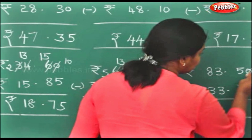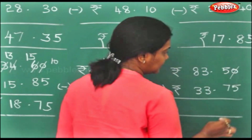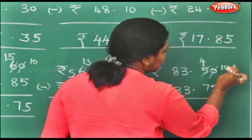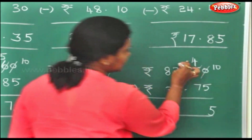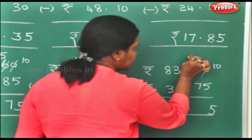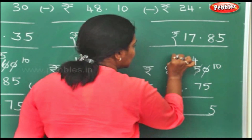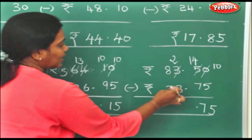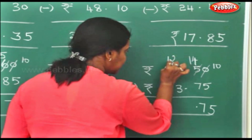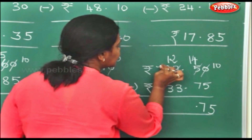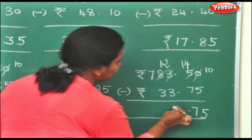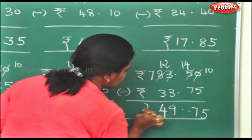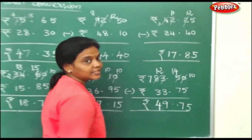Here again, this 0 you cannot minus it, so this becomes 10, this becomes 4. 10 minus 5 will be 5. You cannot take away 4 from 7, so this becomes 14 and this becomes 2. 14 minus 7 will be 7. 2 minus 3 you cannot do it, so this becomes 12 and this becomes 7. 12 minus 3 will be 9, 7 minus 3 will be 4. So rupees 49 and 75 paise.